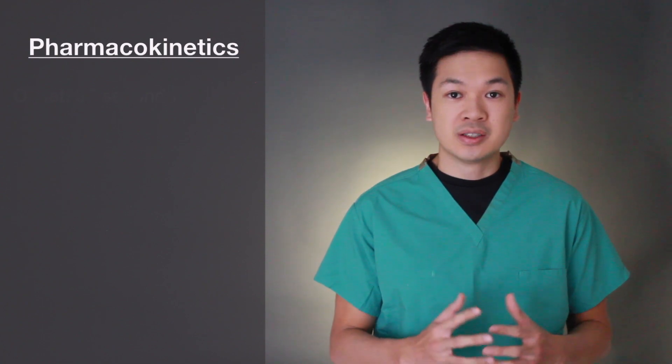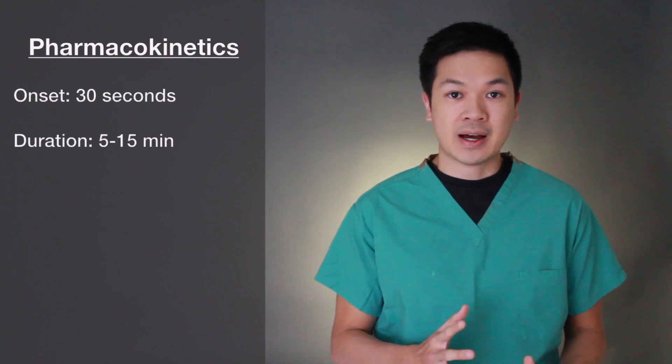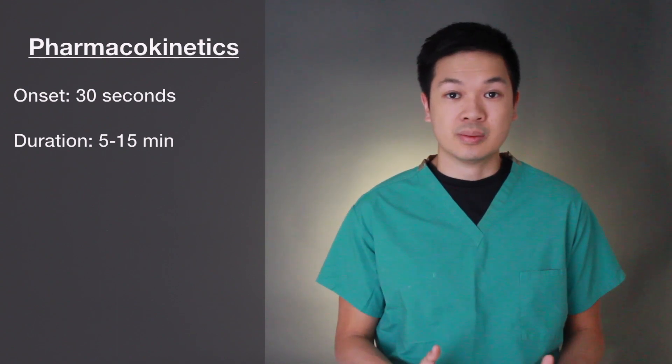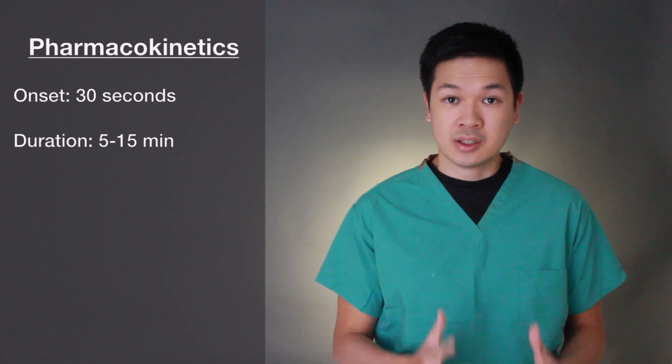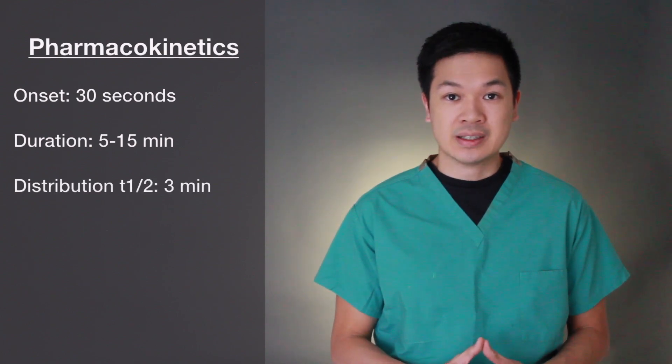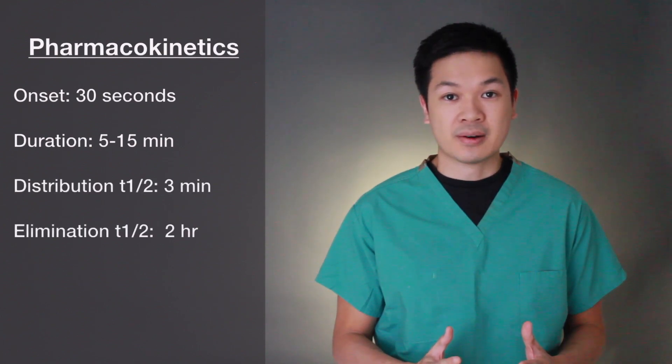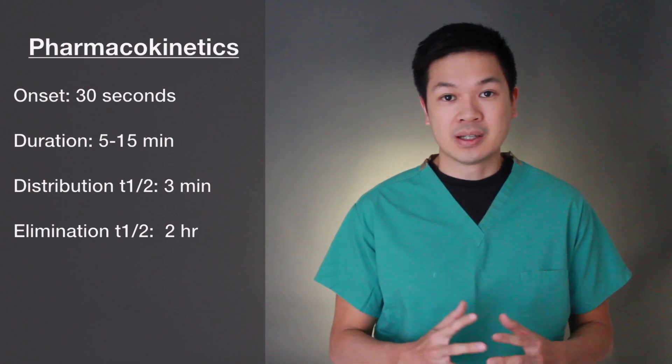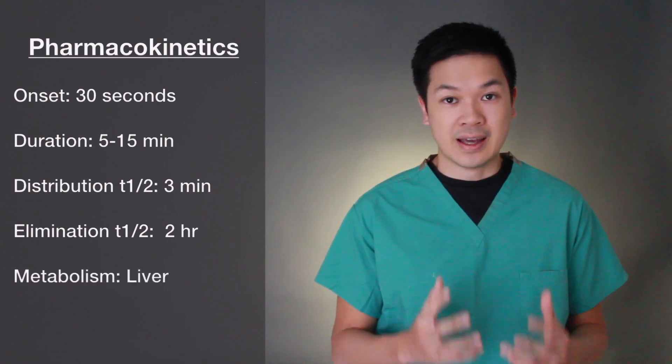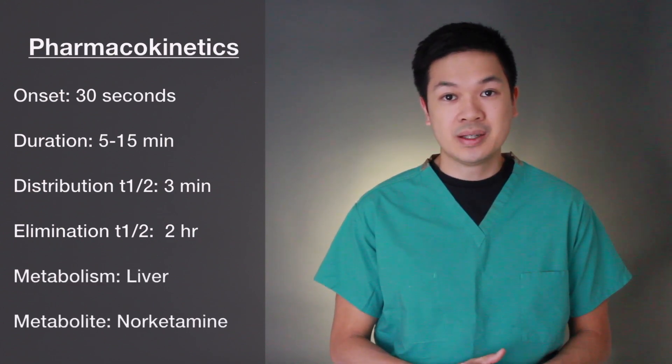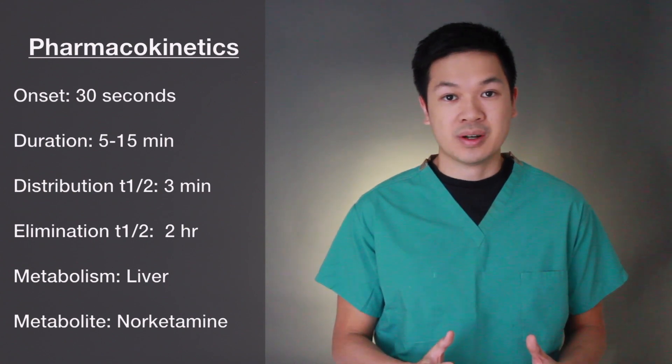The onset of action for ketamine is 30 seconds when administered IV. The duration of action is anywhere from 5 to 15 minutes and is also determined by redistribution. The distribution half-life is 3 minutes and the elimination half-life is 2 hours. Ketamine is metabolized by the liver into the active metabolite norketamine, which is one-third as potent as ketamine and excreted in the urine.